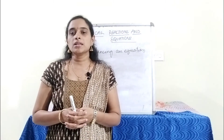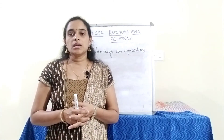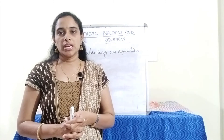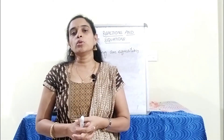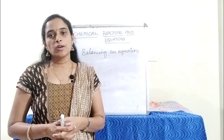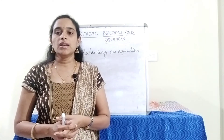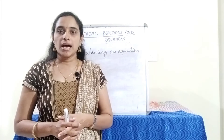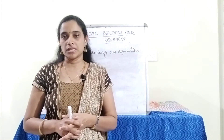Now we will see the steps to balance an equation. Step 1: write the chemical equation. Step 2: write the number of atoms of each element on both sides of the equation. Step 3: balance the element which has the maximum number of atoms first, then balance the other elements in subsequent steps.